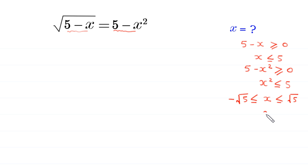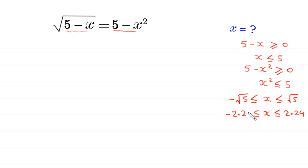In simplified form, x must be less than or equal to 2.24, and x must be greater than or equal to negative 2.24. This is the domain of this equation, which we will use to check the solutions. Now suppose that...